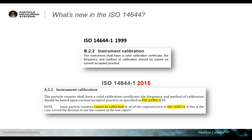Specifically, if you compare the 1999 version of the standard with the 2015 version, you can immediately see that the instrument calibration requirement has been slightly but consistently changed. In the past, the ISO simply required that your particle counter must be calibrated according to the current accepted practice, without specifying any specific standard. While in the new ISO 14644, the ISO committee includes the requirement of calibrating your particle counter according to the 21501-4.